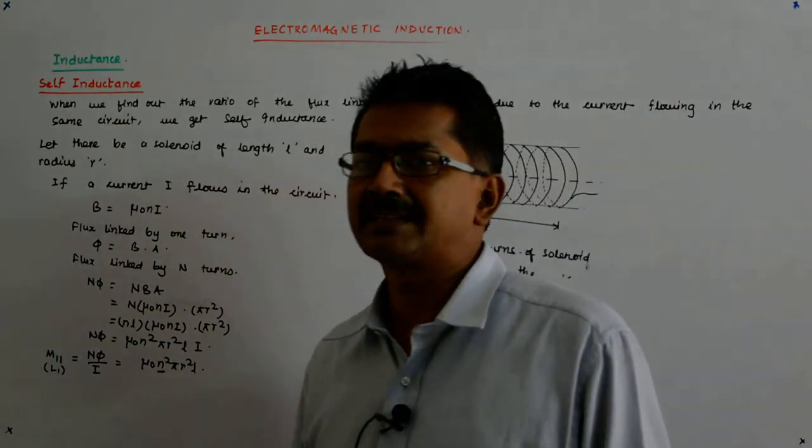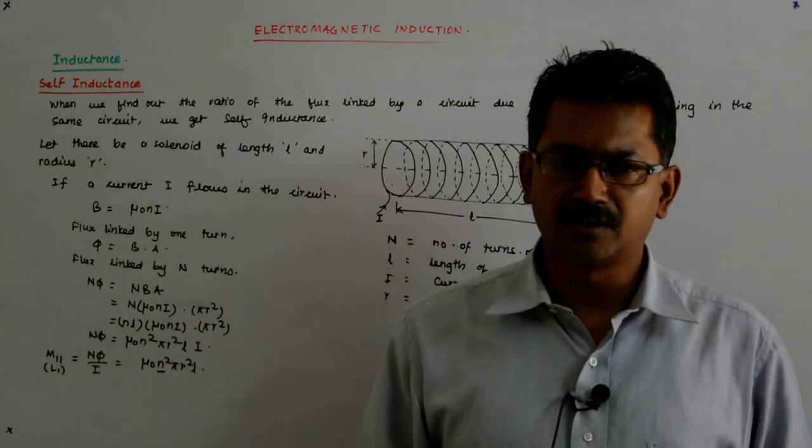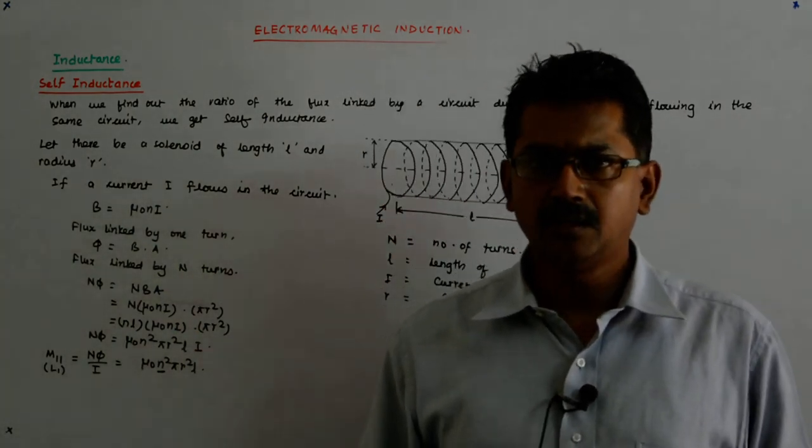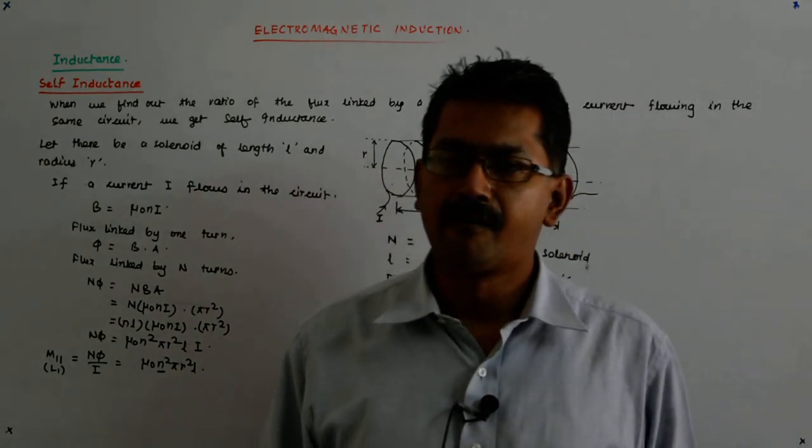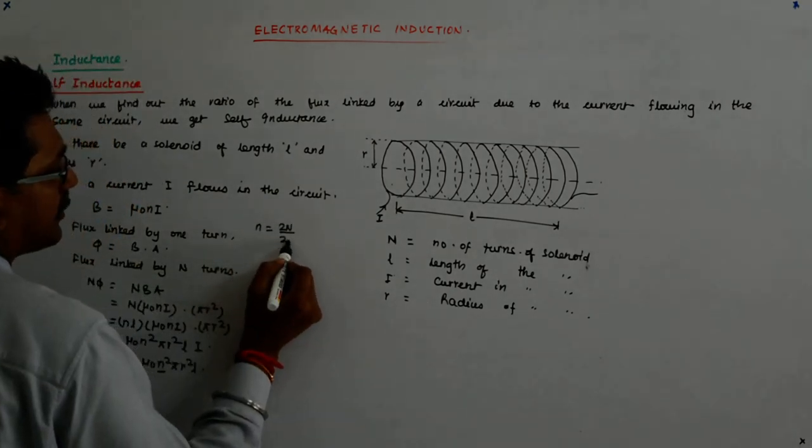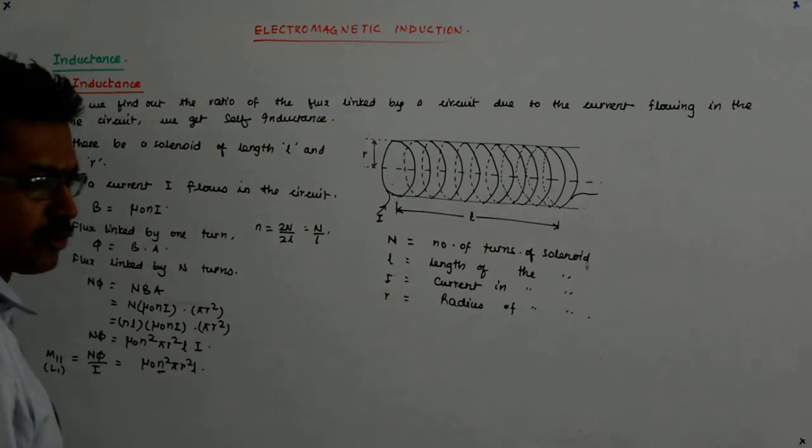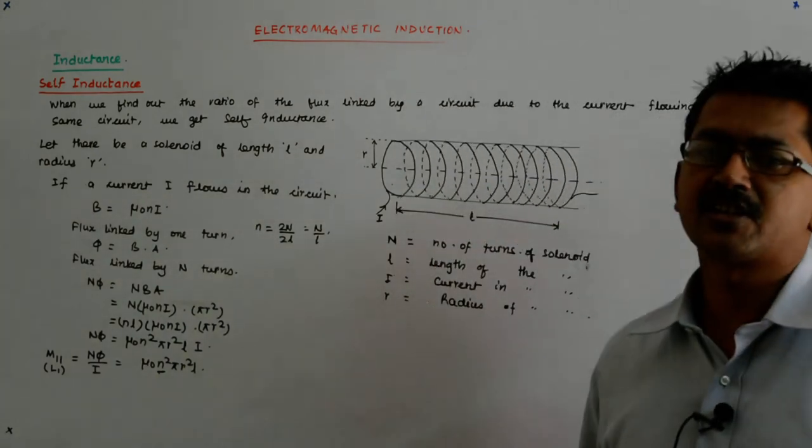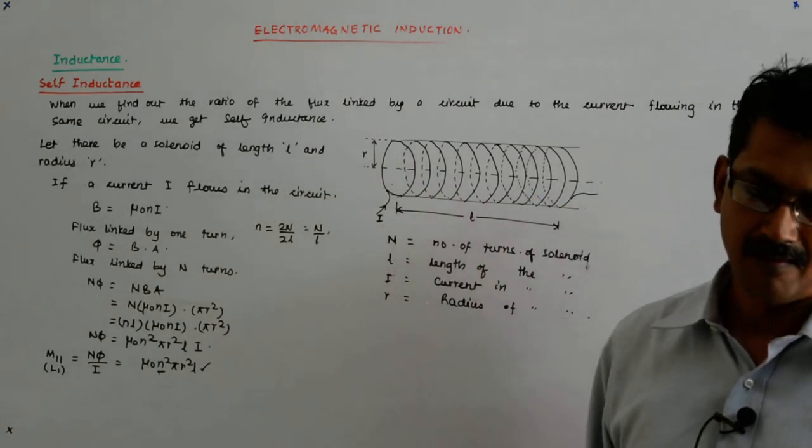What happens if I double the length as well? If I increase the number of turns by two and I double the length of the solenoid as well? See, what happens to n? You make this double, you make this double. So that remains the same. So n does not change. If I double the number of turns and I double the length, number of turns per unit length does not change. So what changes? Only L changes. So it will simply become double.